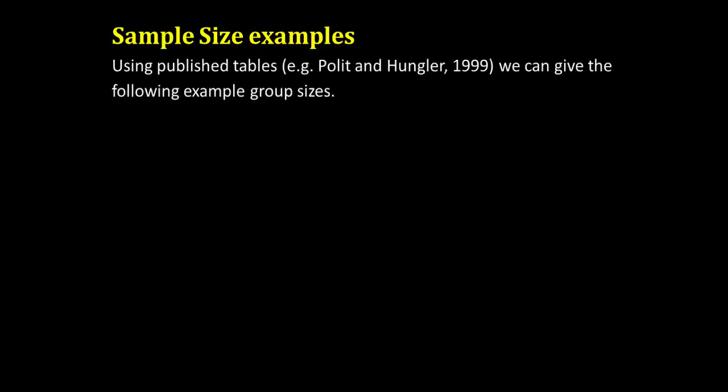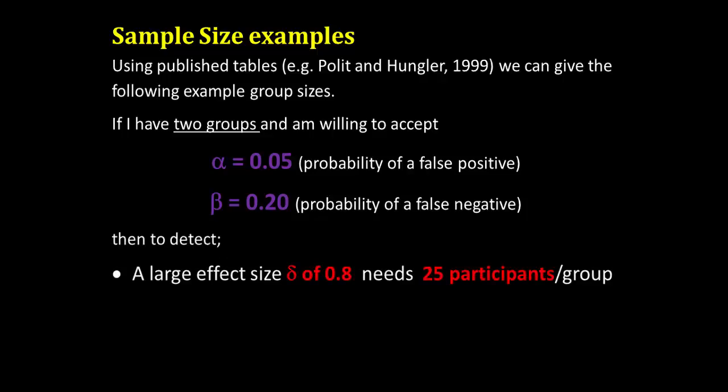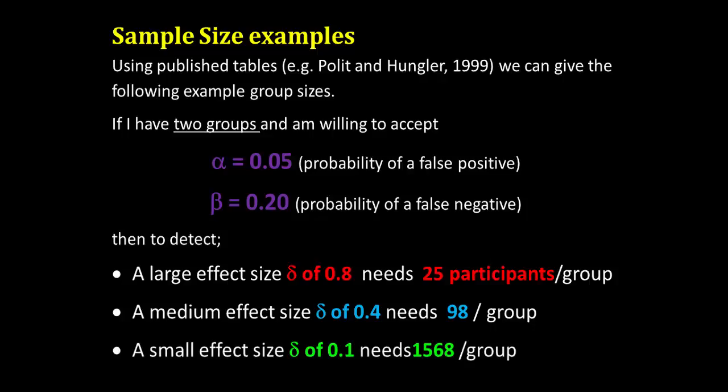So we are now in a position to actually generate sample sizes, and rather than calculate it we simply use published tables. So here I've been working from some tables from Polit and Hungler, and imagine I have two groups and I've decided that I'm willing to accept a Type I error alpha of 0.05, and again I'm willing to accept beta, a Type II error of 0.2, that's 20 percent. Then given those two values, in order to detect a large effect size, say of delta of 0.8, I would need 25 participants per group. If instead I'm looking to see a medium effect size, say of delta of 0.4, I would need just short of 100 participants per group. And for small effect size, for example delta of 0.1, I would need just over 1500 participants per group, which are approximately the same numbers I gave you at the beginning.